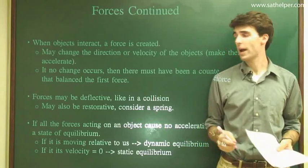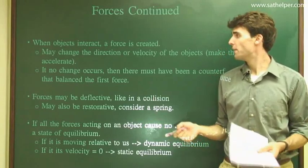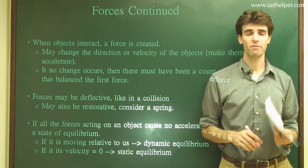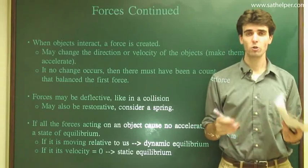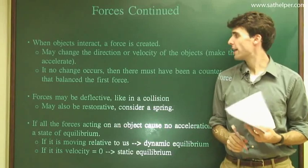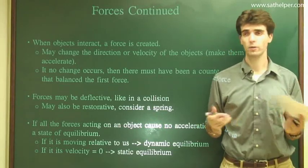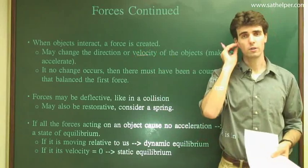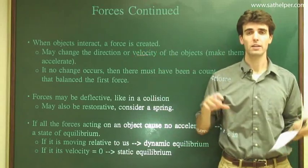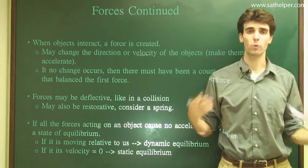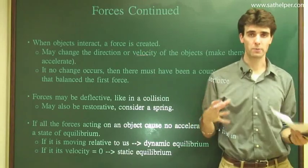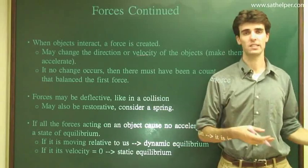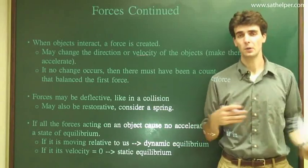So, as I said, when objects interact, a force is created, and this force may change either the direction or speed of an object. This comes from the definition of velocity. Velocity has two components, both direction and speed. And so, for example, you can change the speed when your car is driving down the road, and you hit on your brakes. Your brake pads clamp down on your axle, which exerts a force on the wheel, which exerts a force on the road, which stops your car. This is an example of changing your linear velocity from some velocity, maybe 30 meters per second, down to zero as you stop.